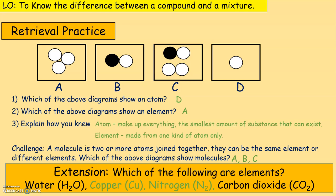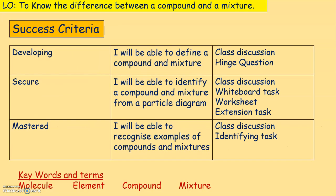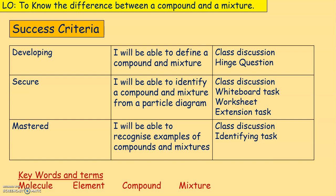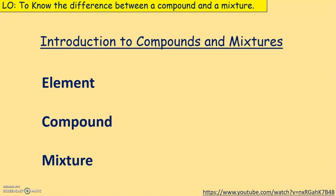Copper, nitrogen and other labels are showing what elements they are. Today we're looking at differences between a compound and a mixture. We should be able to define a compound and a mixture, identify them from a particle diagram, and recognize examples of compounds and mixtures. During my explanation, it's important that you define these keywords at the back of your book. Pause the video and write this down.